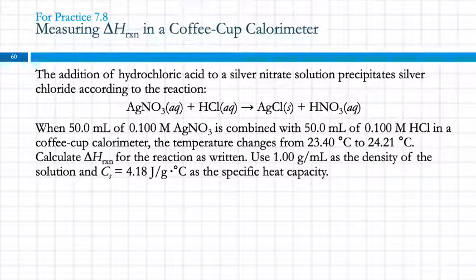So here's an example. The addition of hydrochloric acid to a silver nitrate solution precipitates silver chloride according to the reaction. When 50 milliliters of 0.1 molar silver nitrate is combined with 50 milliliters of 0.1 molar HCl in a coffee cup calorimeter, the temperature changes from 23.4 degrees Celsius to 24.21 degrees Celsius. Calculate delta H for the reaction as written. And use one gram per milliliter as the density of the solution and specific heat capacity of 4.18 joules per gram degree Celsius.